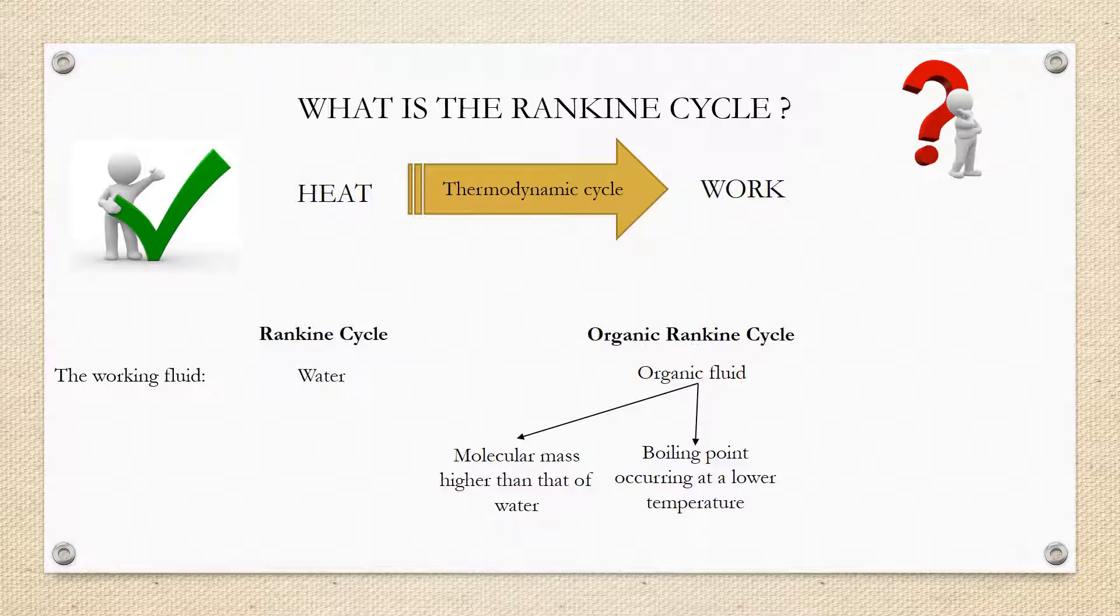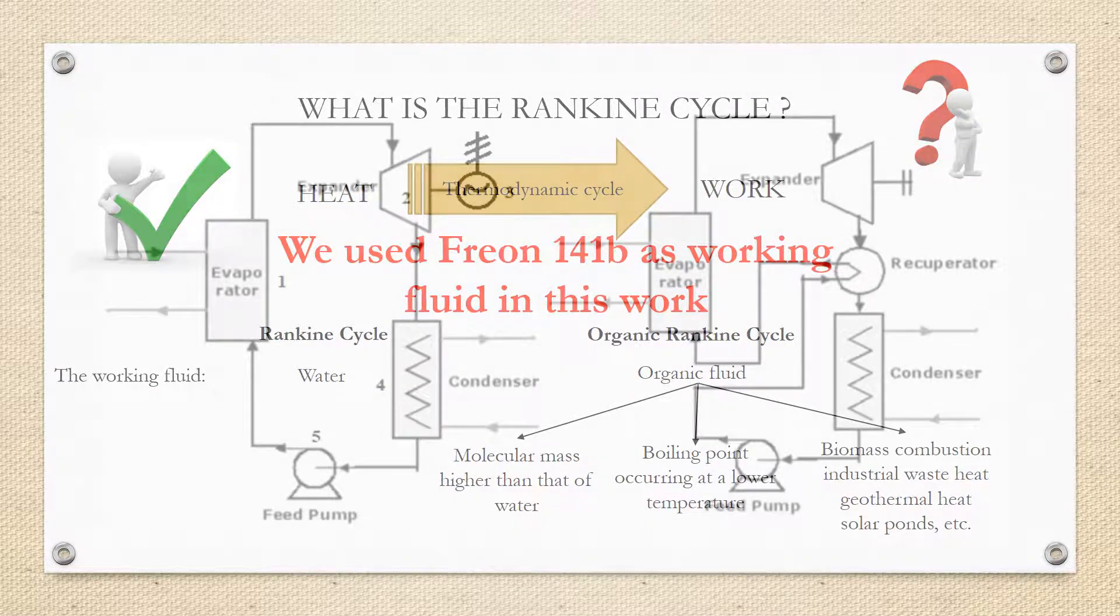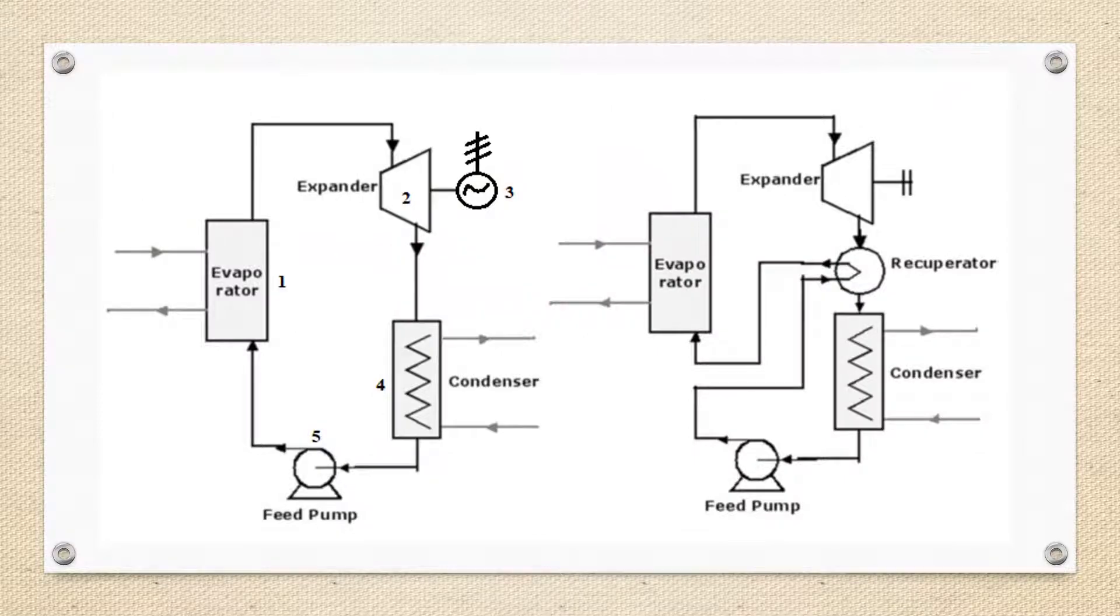The fluid allows Rankine cycle heat recovery from lower temperature sources such as biomass combustion, industrial waste heat, geothermal heat, solar ponds, etc. In this work we use Freon 141B as working fluid. The low temperature heat is converted into useful work that can itself be converted into electricity.